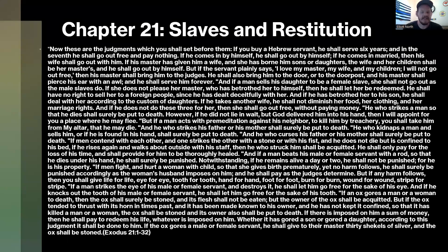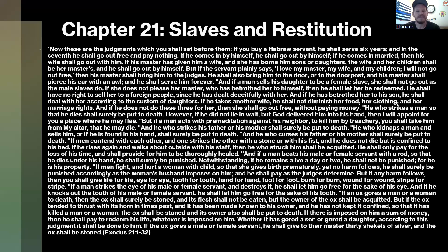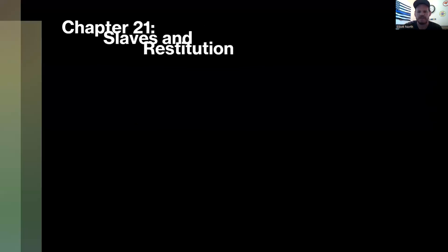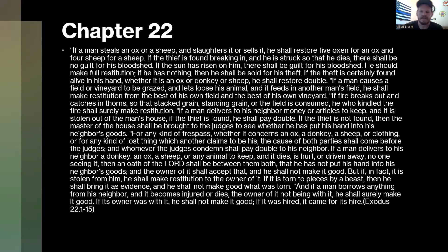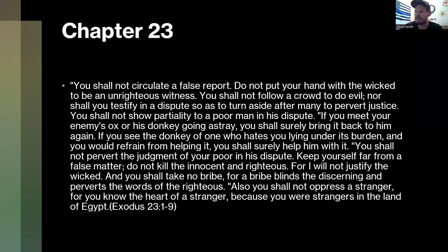At the tail end of chapter 20: 'You shall not make anything to be with me — gods of silver, gods of gold you shall not make for yourselves.' God is a jealous God — only him. Then we see God laying down the law on slaves and restitution, what to do if a donkey falls in a pit, what happens if people steal, if someone tries to entice a betrothed woman. Chapter 23: 'Do not circulate a false report. Do not put your hand with the wicked to be an unrighteous witness.'